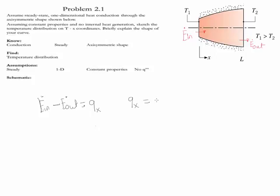Qx is defined using Fourier's law as K, the area in the x-axis, and the gradient of the temperature. Because it's only 1D, we could simply write dT/dx.